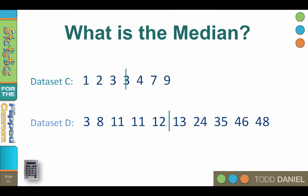So again, when there are an odd number of data points, the median will be a middle number. When there are an even number of data points, the median will be between two numbers that we must then average.